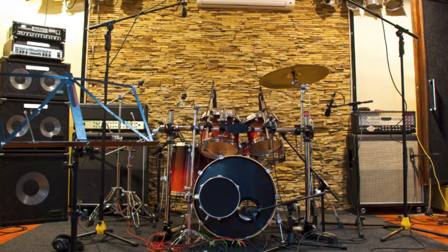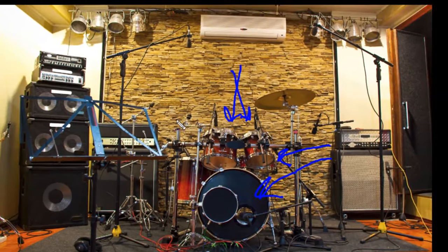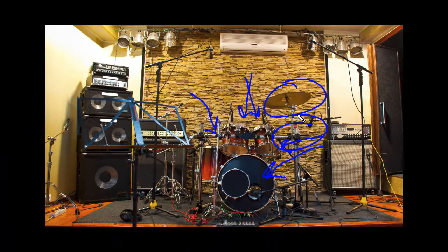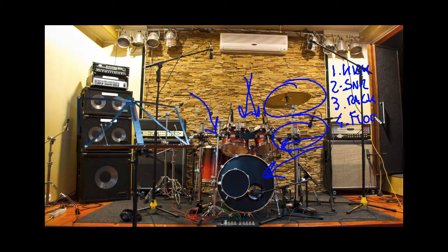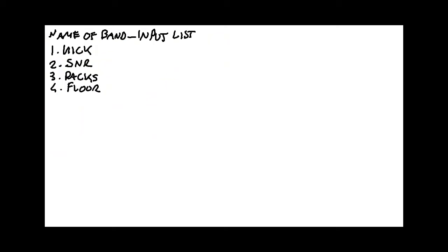An input list is just a list of all the sources on stage. If we take our drum kit, we've got our kick drum — one source, one channel. We've got our snare drum as another channel, our rack toms, floor tom, cymbals, hi-hats, and so on. At a very basic level, channel one would be kick, channel two would be snare, channel three might cover the two rack toms with just one microphone, and channel four would be our floor tom.